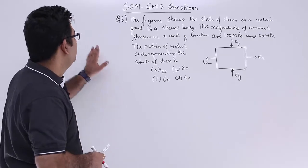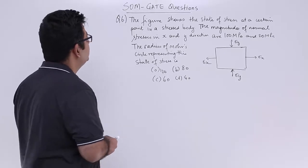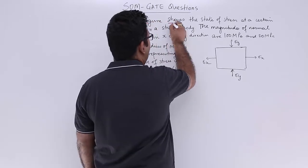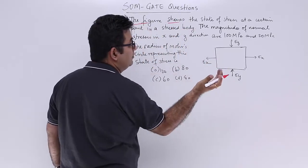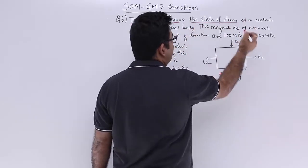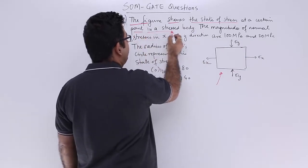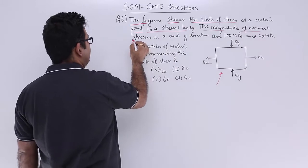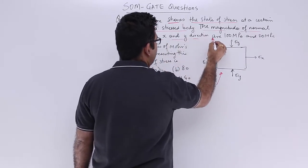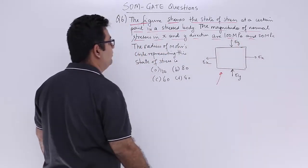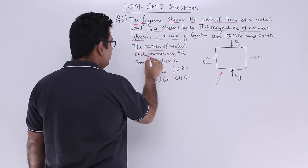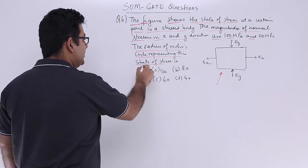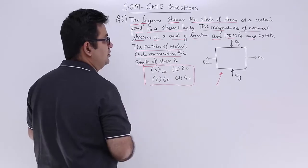Now let's come to question number six. The question states: the figure shows the state of stress at a certain point in a stressed body. The magnitudes of normal stresses in x and y direction are 100 MPa and 20 MPa. The radius of Mohr's circle representing the state of stress is one of these four options.